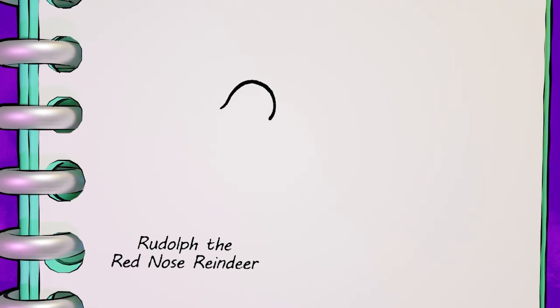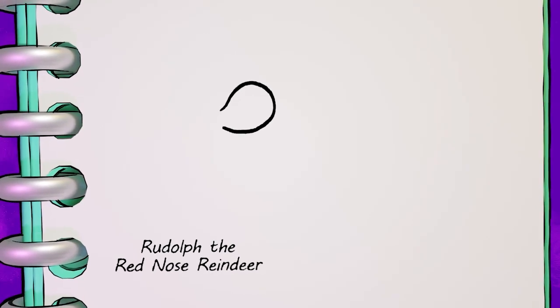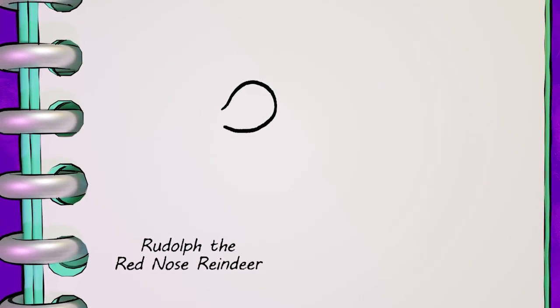First, we're starting with Rudolph's head, which is a little lopsided curve like this, followed by a circle for his nose.